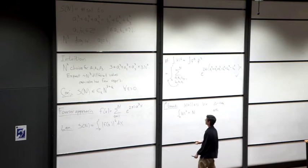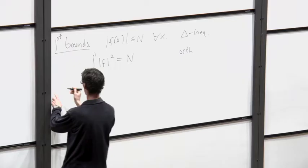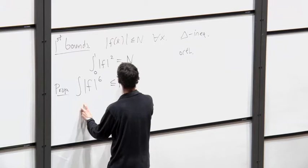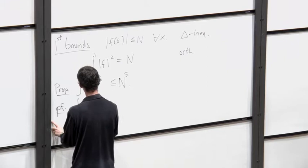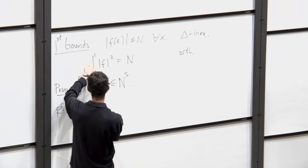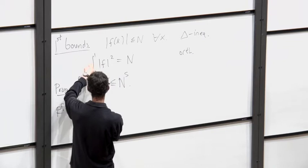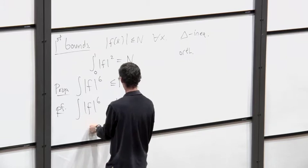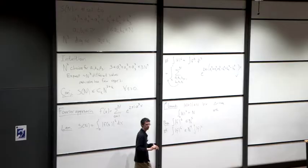We can combine these two basic facts. Proposition: the integral of |f|⁶ is bounded by n⁵. Proof: I want to use orthogonality, the deeper of the two facts. To get from |f|⁶ to |f|², I use the pointwise bound: the integral of |f|⁶ is at most n⁴ times the integral of |f|², and since the integral of |f|² is n, this gives n⁵.